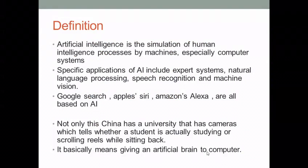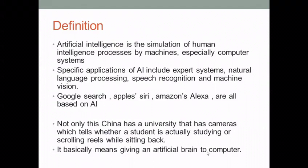Nowadays we are using Google Search, Apple Siri, and Amazon Alexa — all these are based on AI. Not only this, China has a university that has cameras which tell whether students are actually studying or scrolling reels while sitting in the classroom. It basically means giving an artificial brain to the computer system.